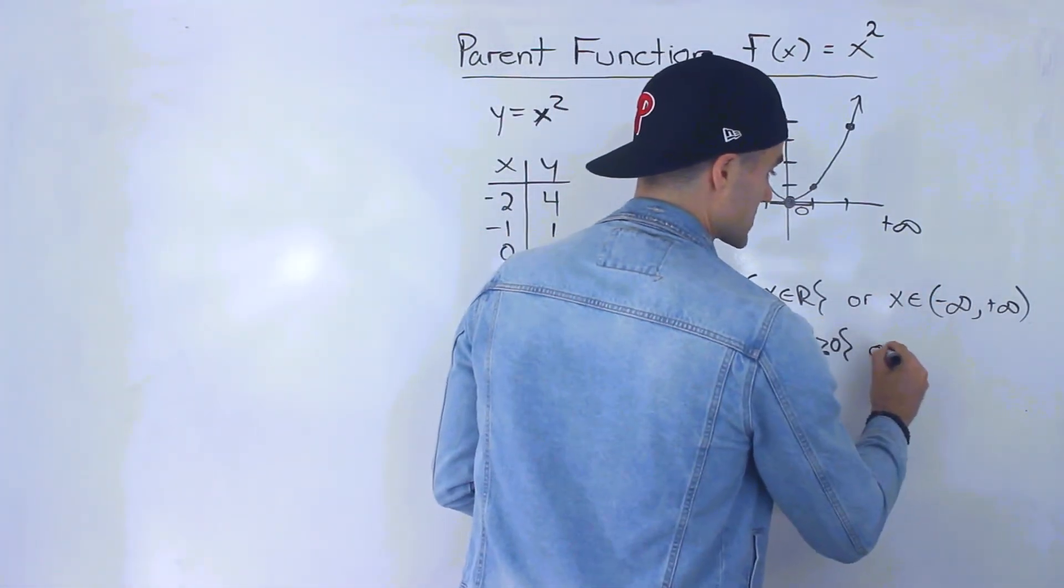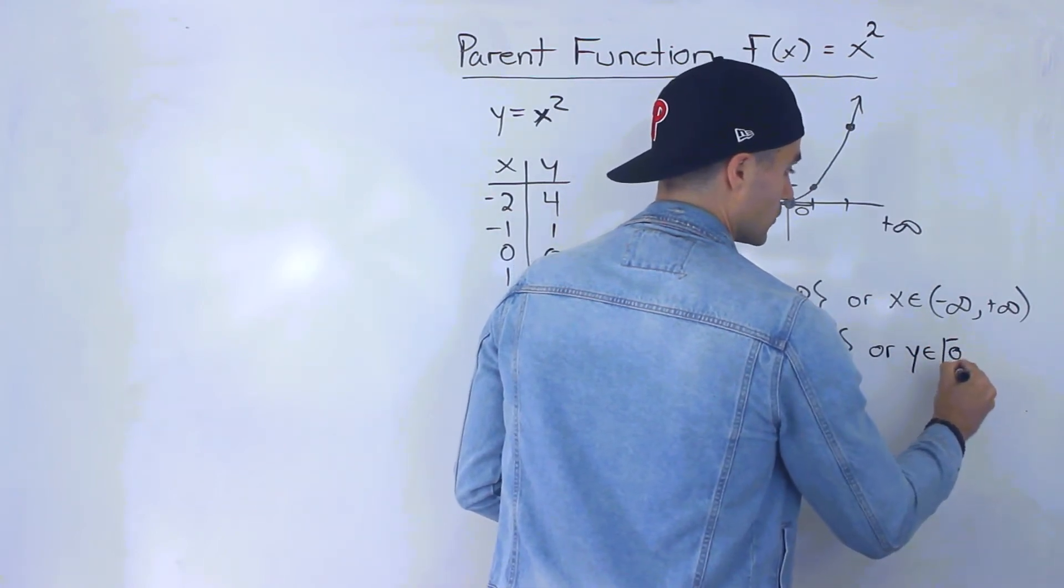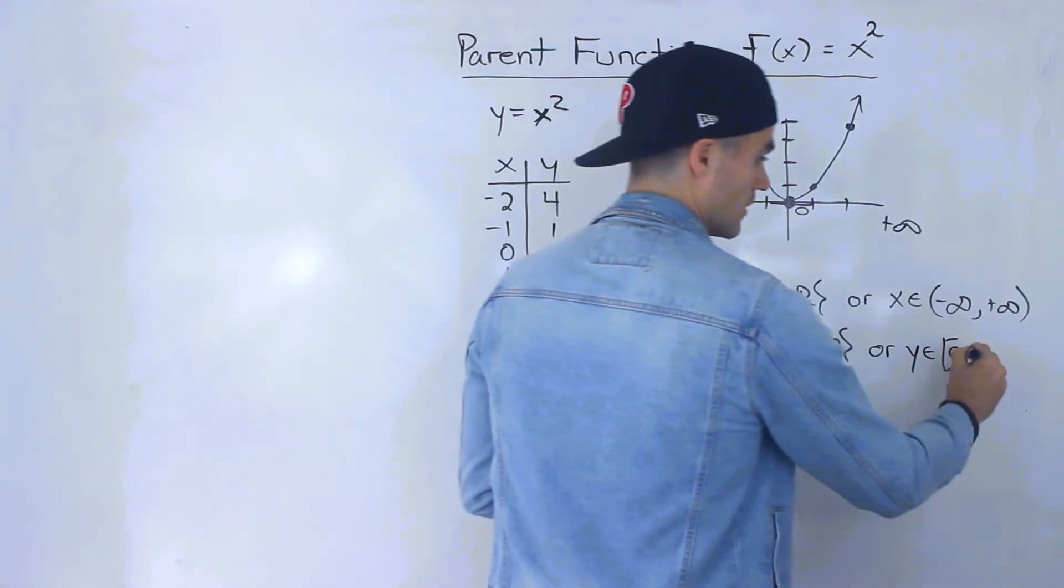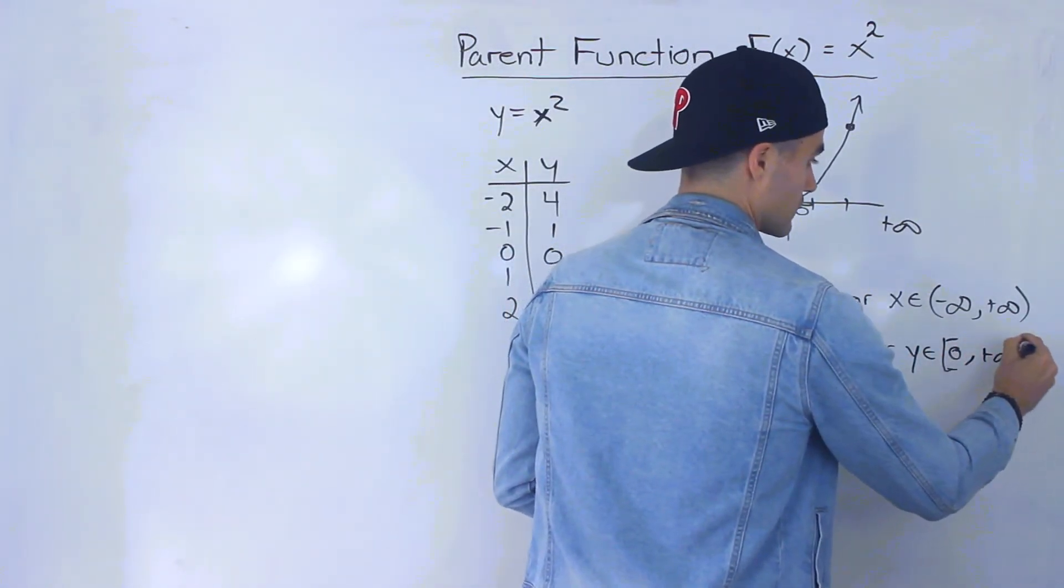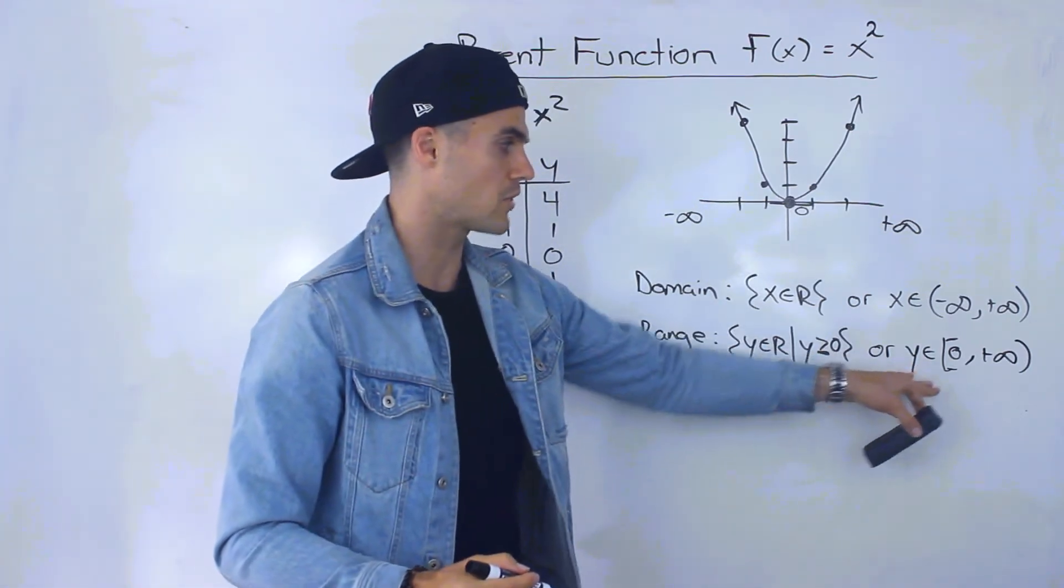If we use interval notation, we would say y is an element from 0—you would put a square bracket here because it's inclusive of the 0—to positive infinity.